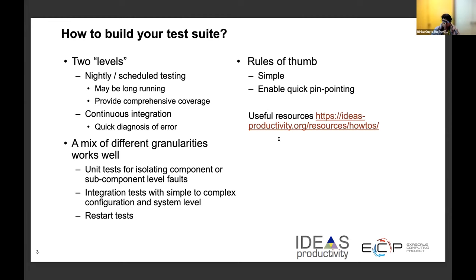In complex software, you cannot have comprehensive coverage through continuous integration because it will take too long — you don't have that many hours to spare after every commit. So a second level of testing, called nightly tests or scheduled testing, becomes important because you can afford to spend more hours and have more coverage. When thinking about granularity of tests, the rule of thumb is that we want tests to be simple, but we also want to ensure they enable us to quickly pinpoint the source of errors.